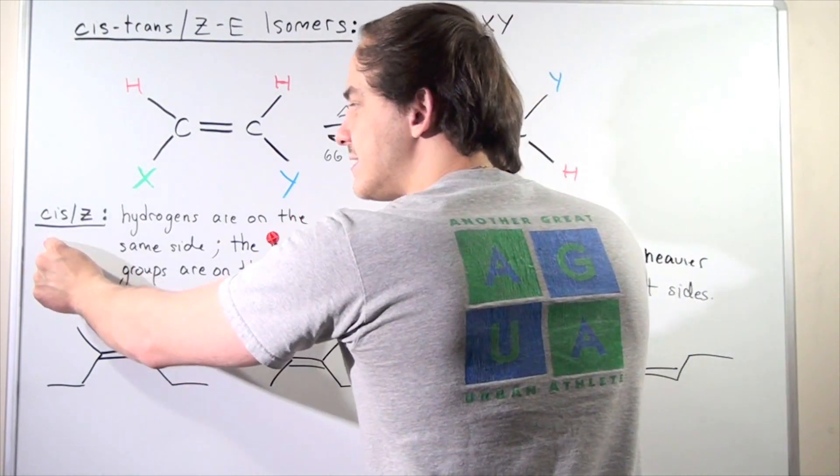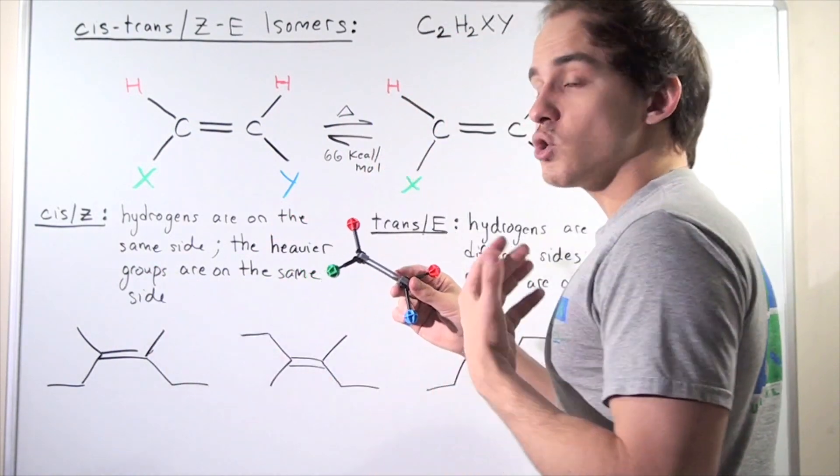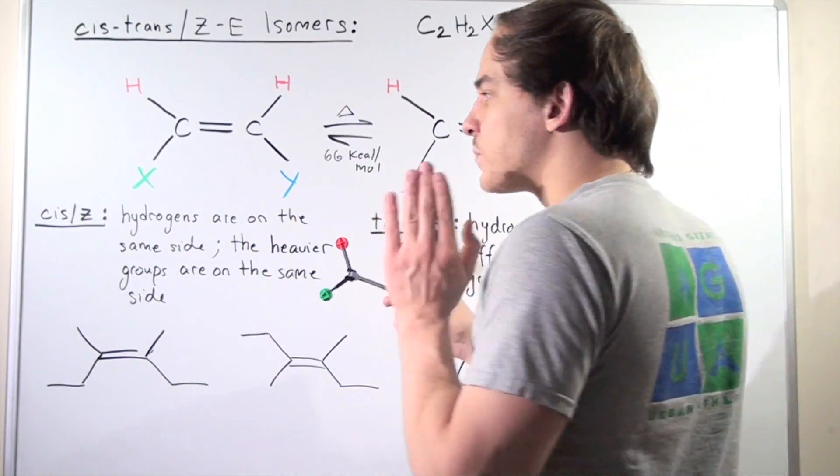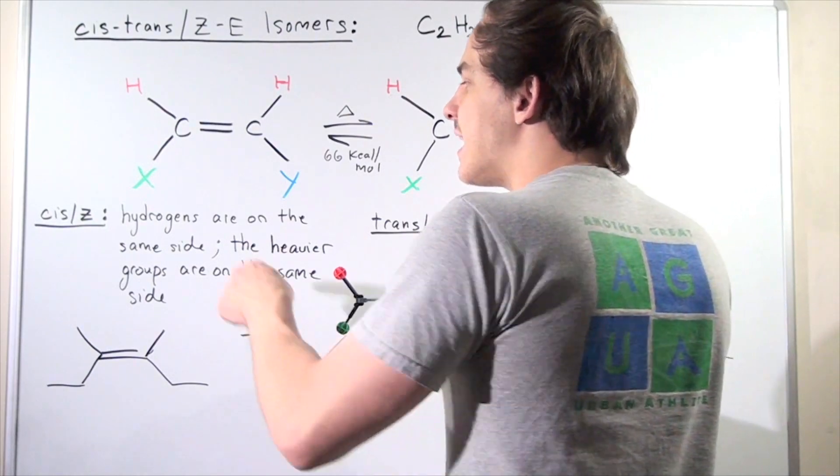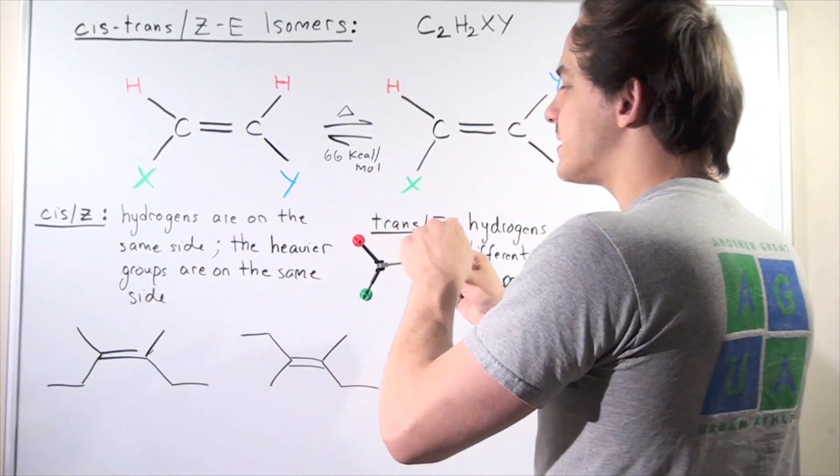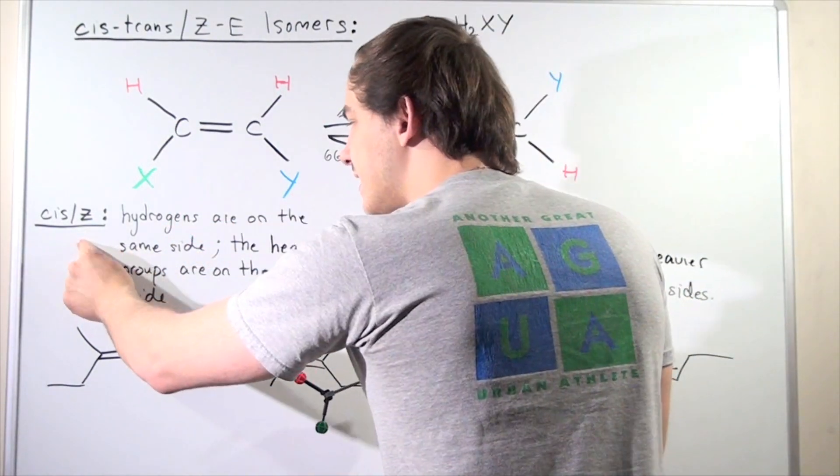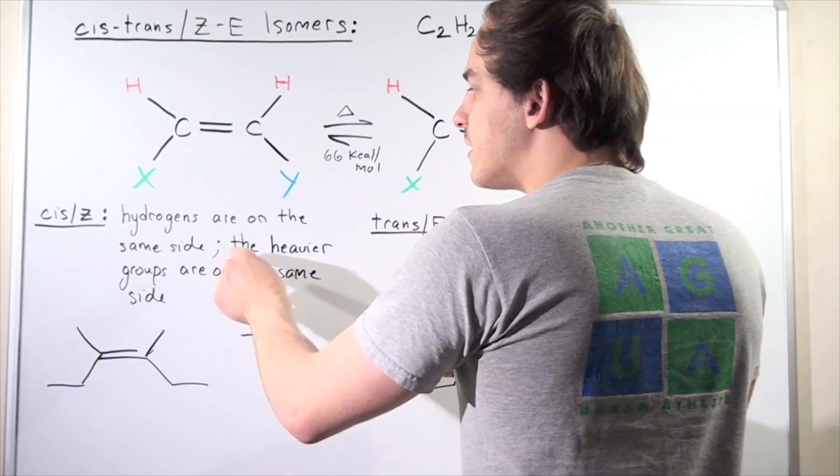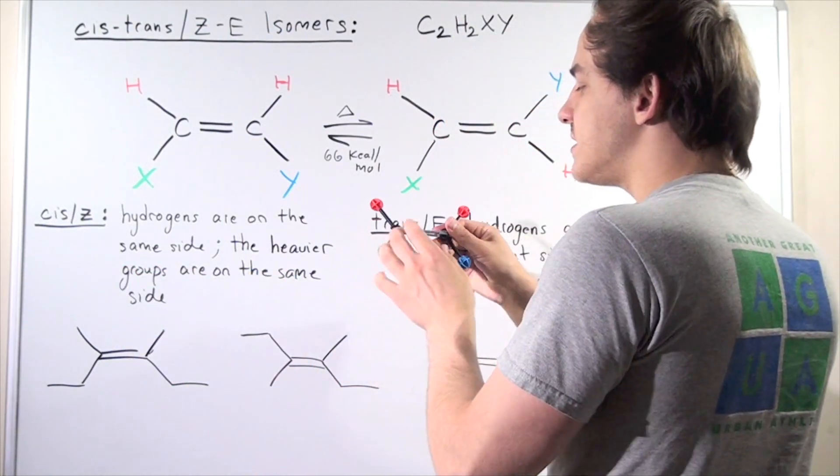In other words, we define cis compounds as hydrogens being on the same side, and we define Z compounds as having the heavier groups on the same side.